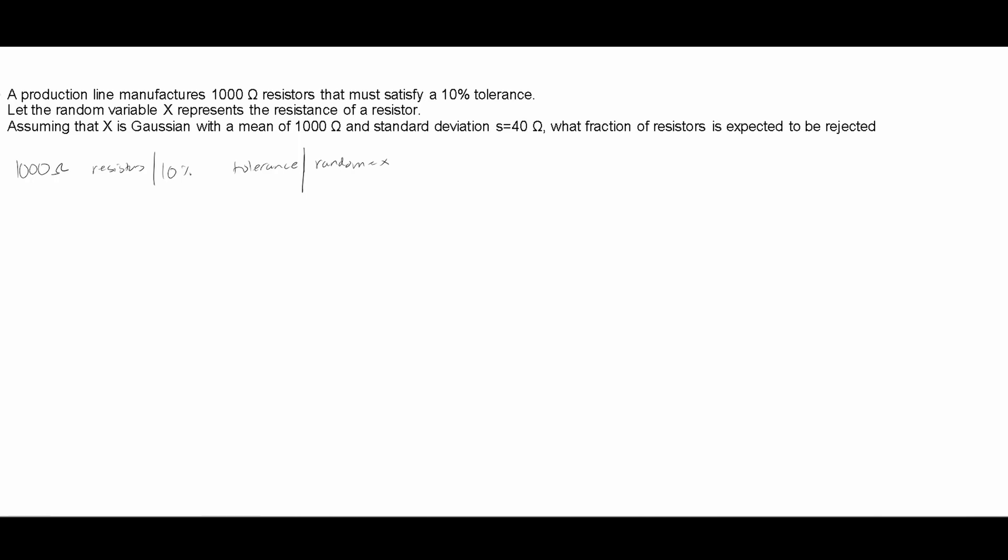Now assume that X is Gaussian. So we're going to be using the Gaussian part with a mean of 1,000 ohms and standard deviation of σ equaling 40.